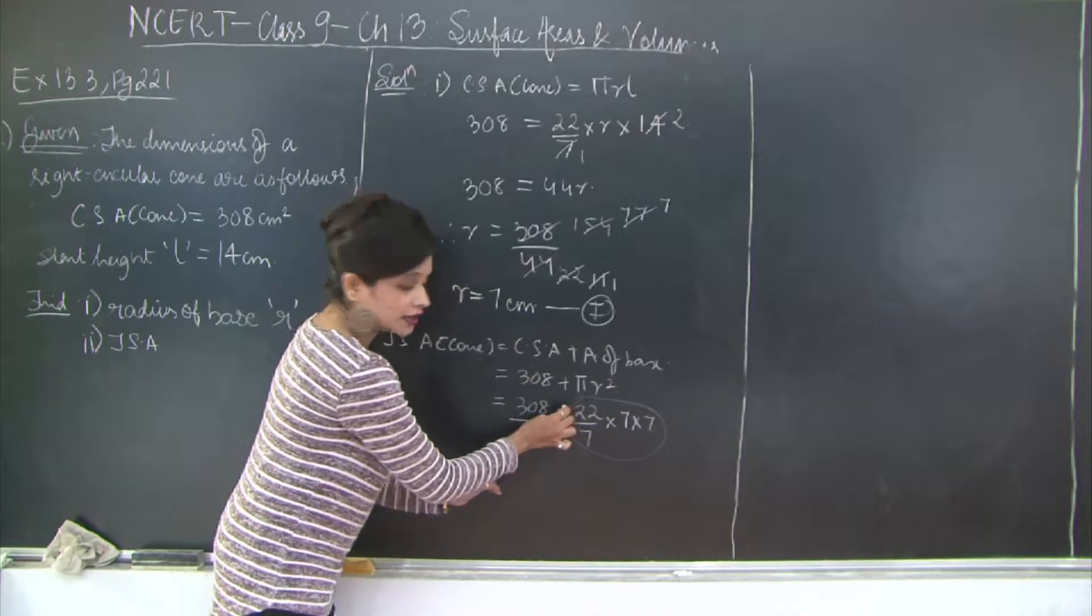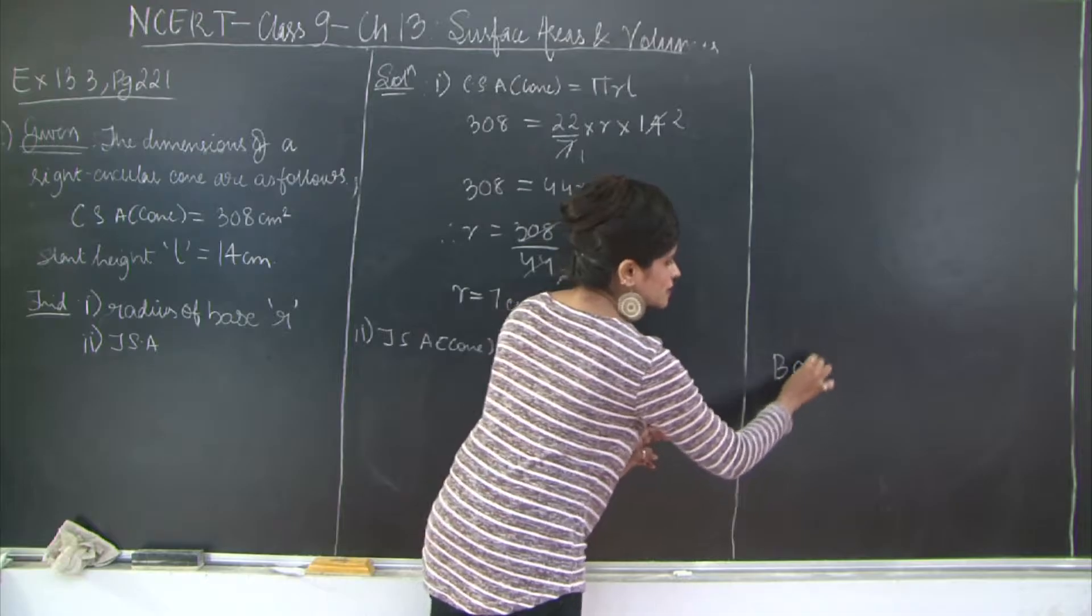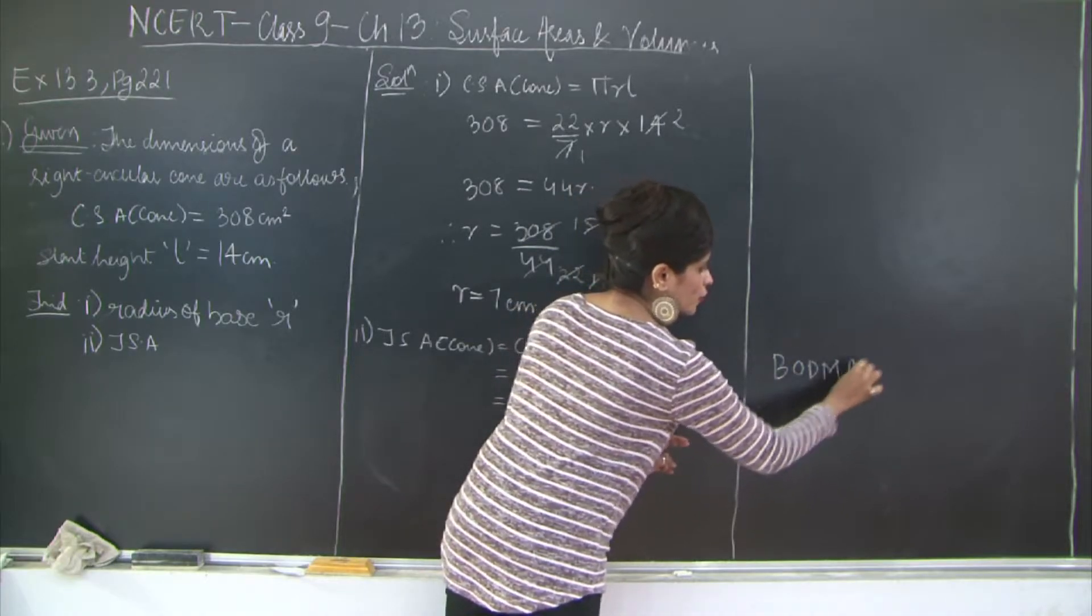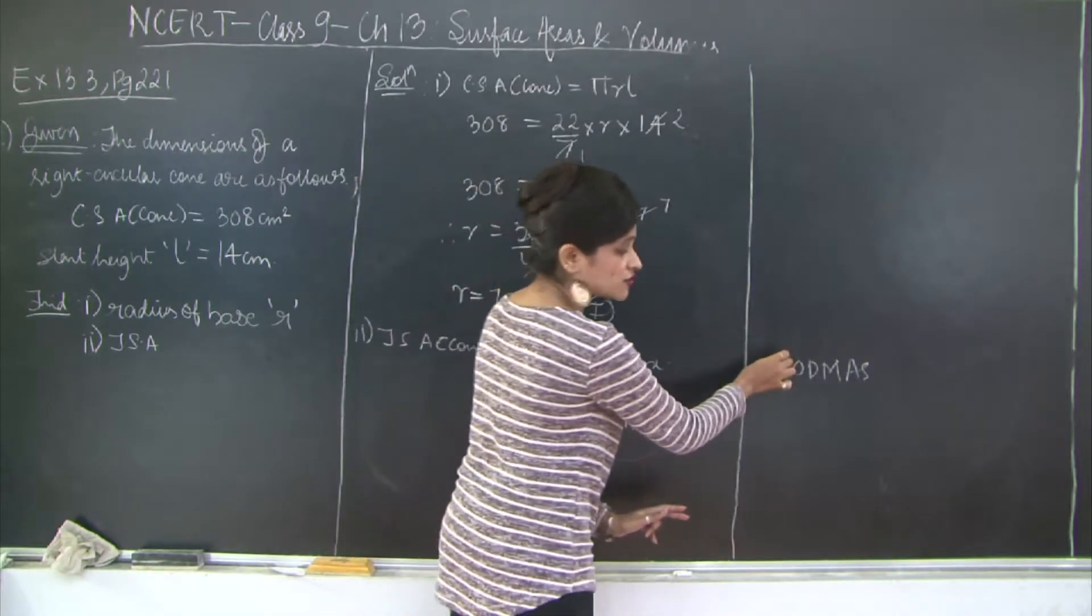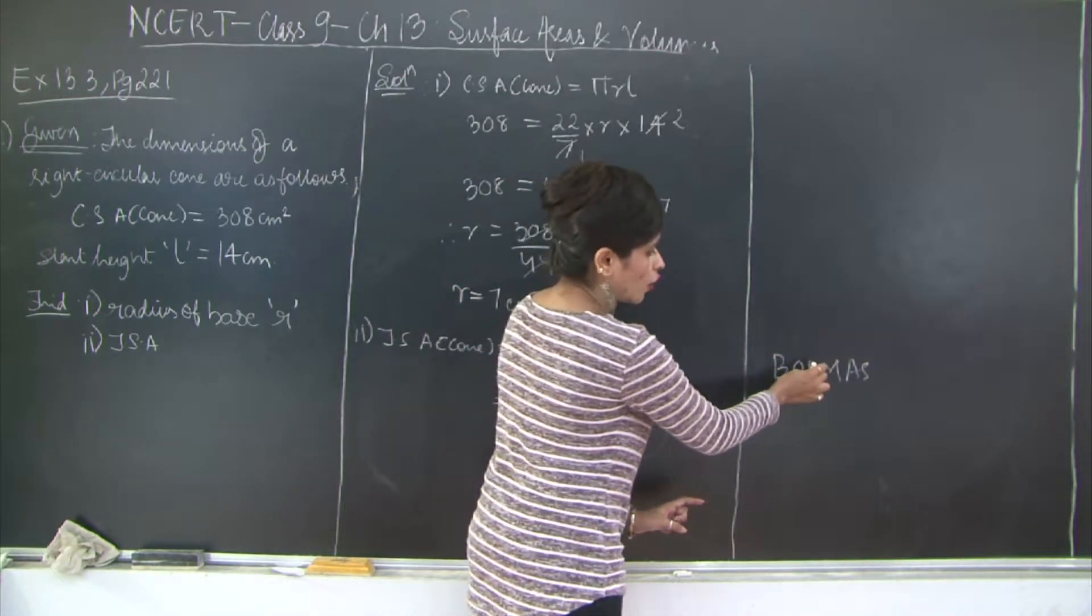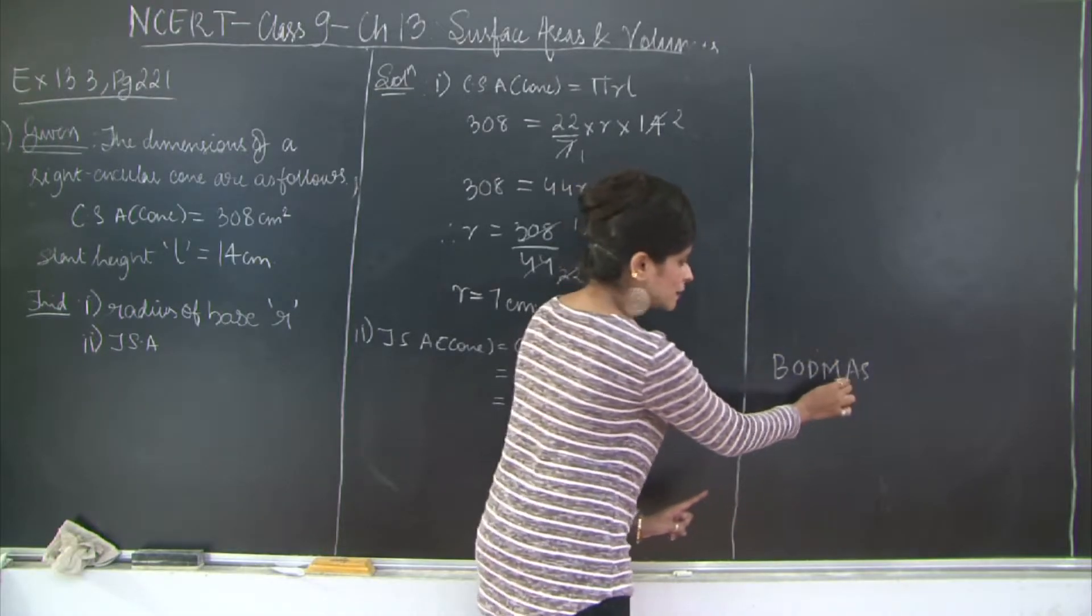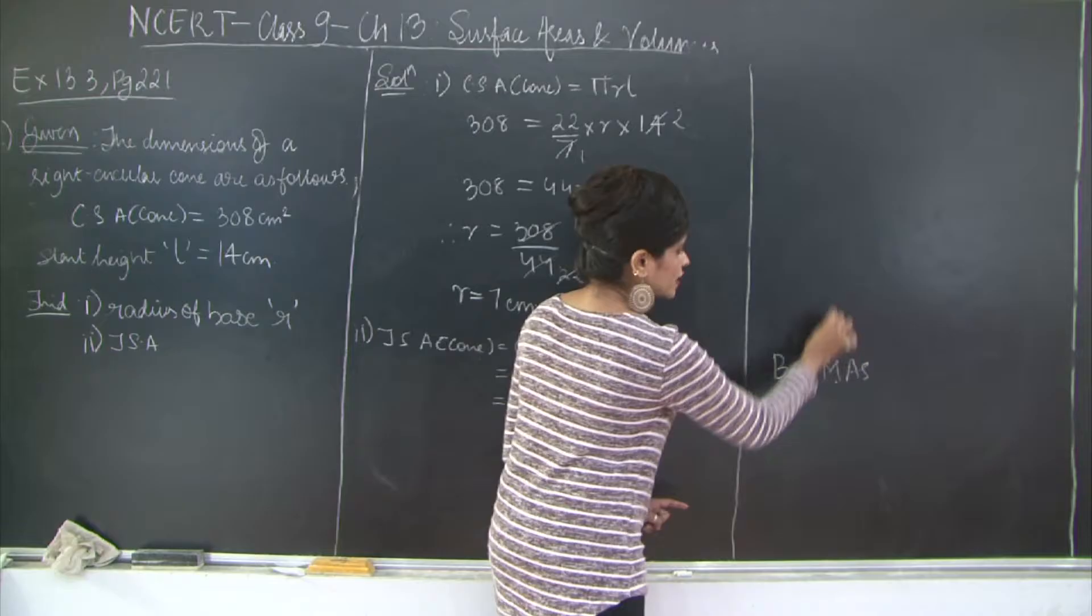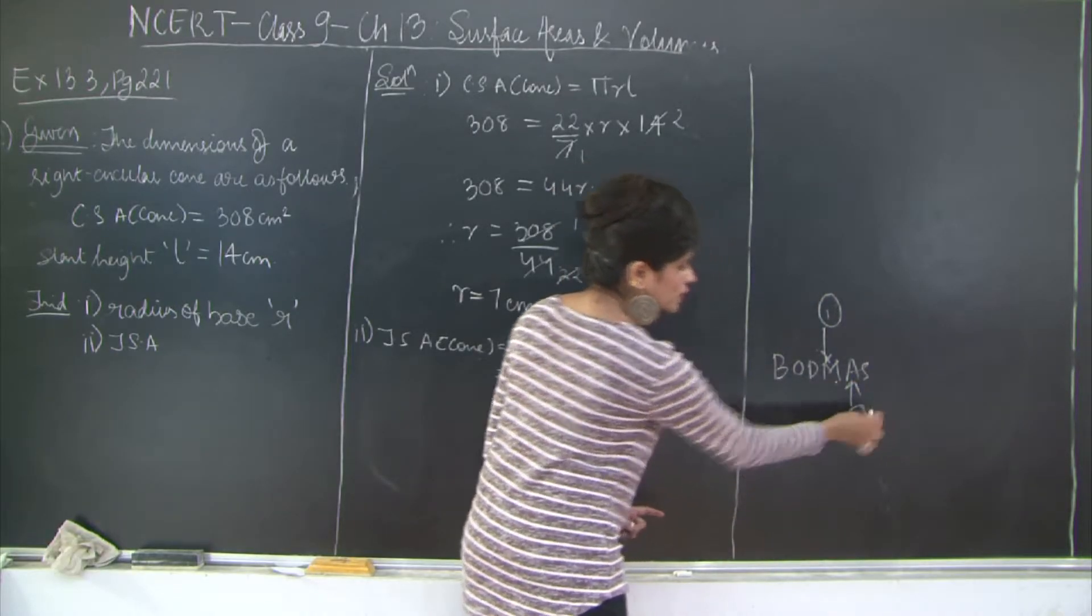So whenever you get terms like this, when you have addition and multiplication, remember that you have BODMAS, which states the series of how you are supposed to solve your questions. It is always first what is there in the brackets of division, then multiplication, then addition and subtraction. So multiplication comes before addition. So first priority is always given to multiplication and second priority here will be given to addition.